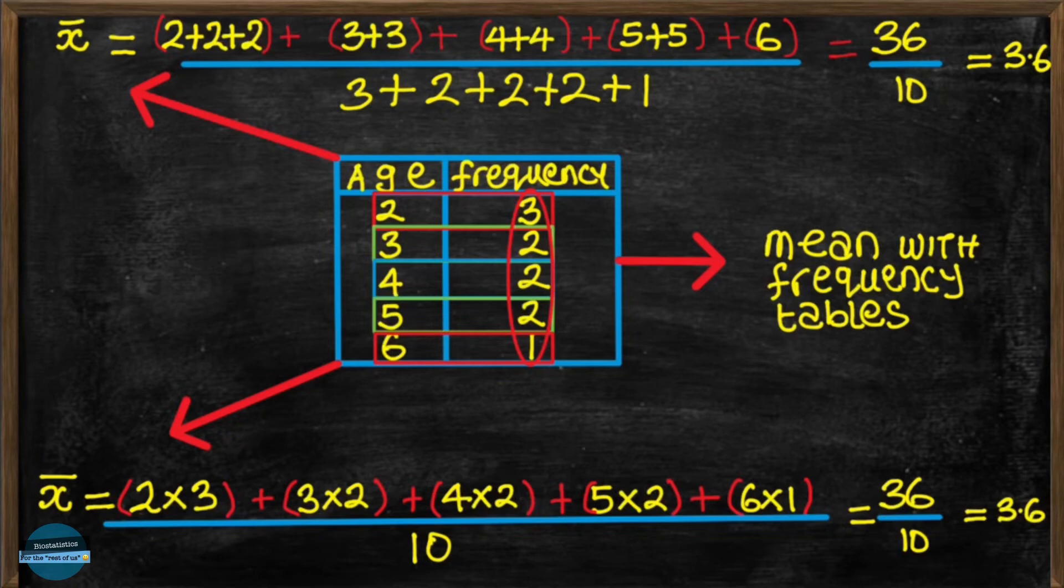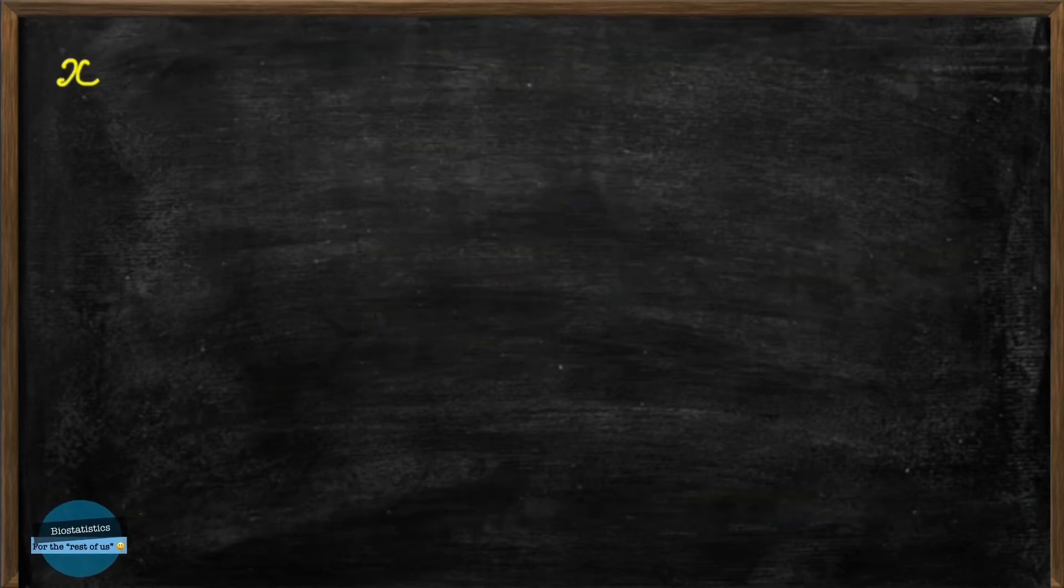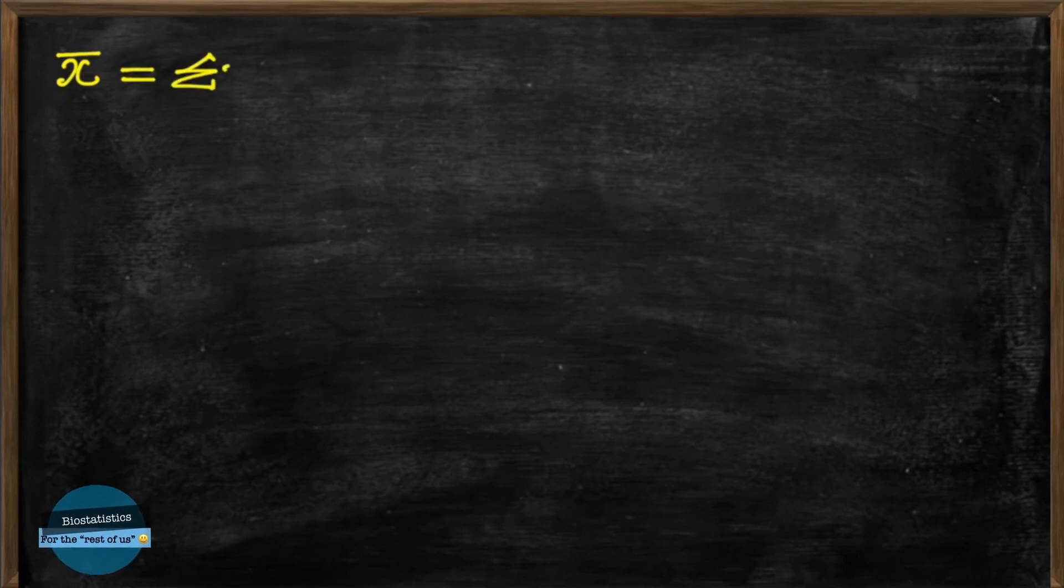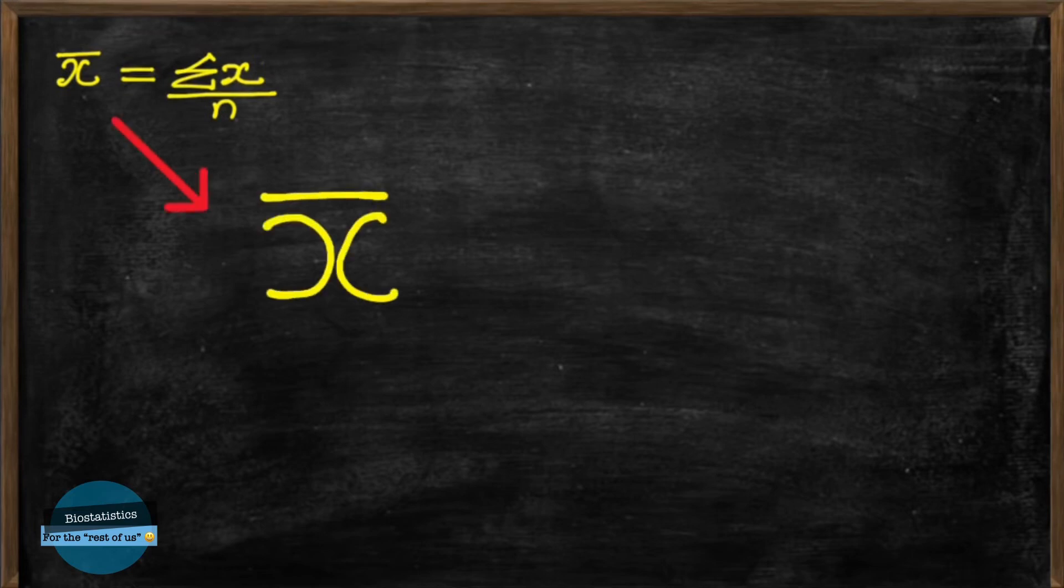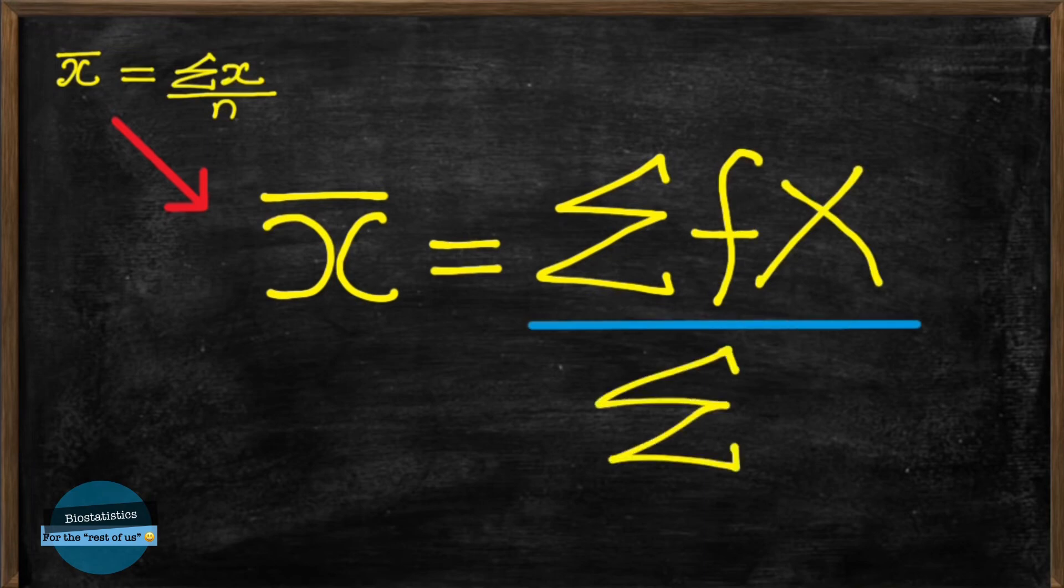We can easily calculate the mean using a slight modification of the standard formula. We know the standard formula has been x bar is equal to sigma x all over n. We can easily modify that formula to give us x bar equal to sigma f times x divided by sigma f. This is simply the same way we did it before, but the formula brings it out clearly.